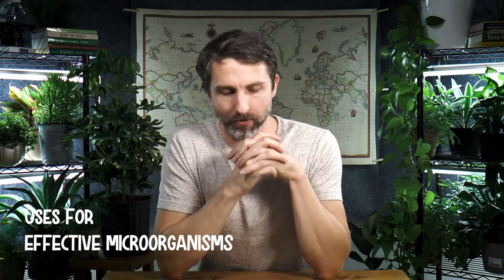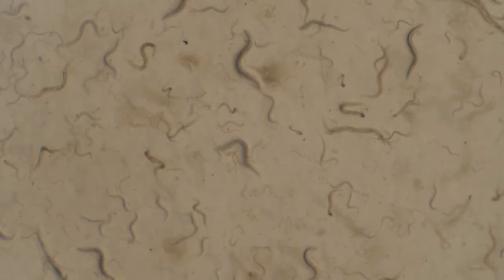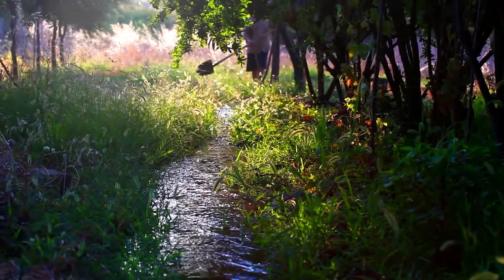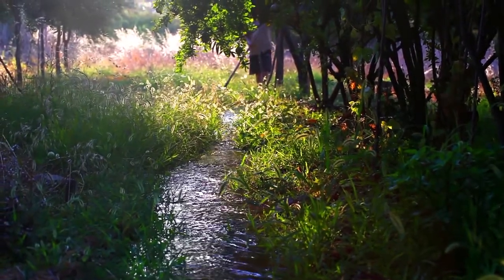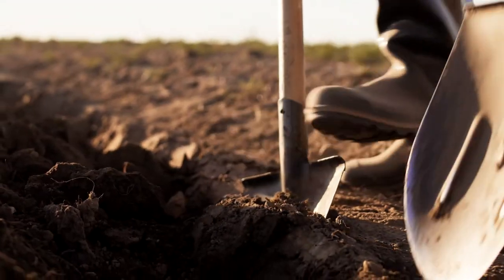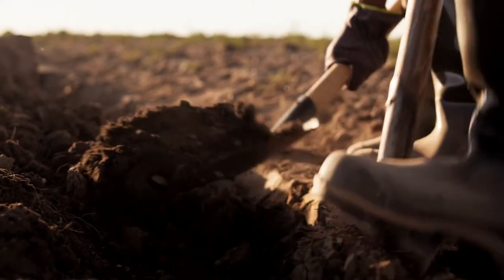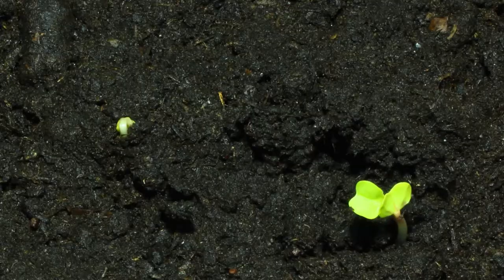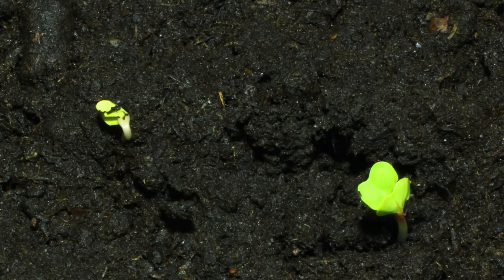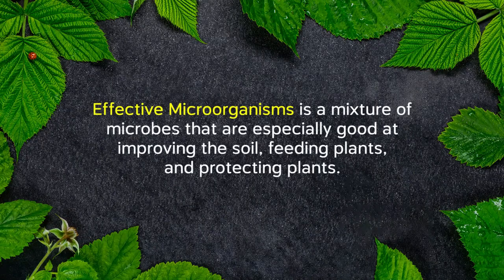So, uses for effective microorganisms. First of all, we already know that microorganisms do a lot in our world — in the soil, with plants, in water, in our bodies. And in the garden, they do a lot to improve the soil, to feed plants, and to protect plants from diseases. I really think of EM as a culture of microorganisms that are especially good at doing those things for us.